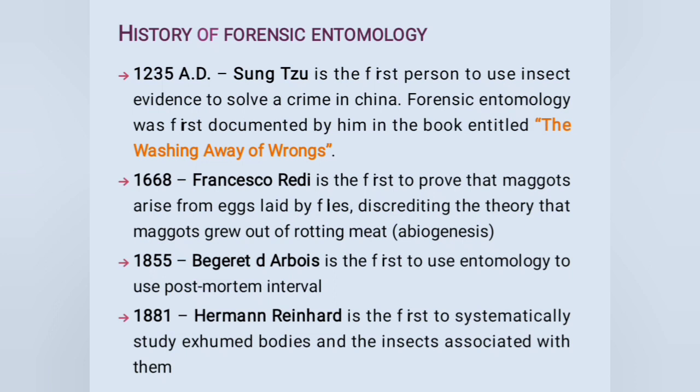In the year 1668, Francisco Reddy was the first to prove that maggots arise from eggs laid by flies, discrediting the theory that maggots grew out of rotting meat — known as abiogenesis. In the year 1855, Bagariddi Arbois was the first to use entomology to estimate the post-mortem interval (PMI), which is defined as the time period between the death of an individual or animal and the recovery of the dead body.